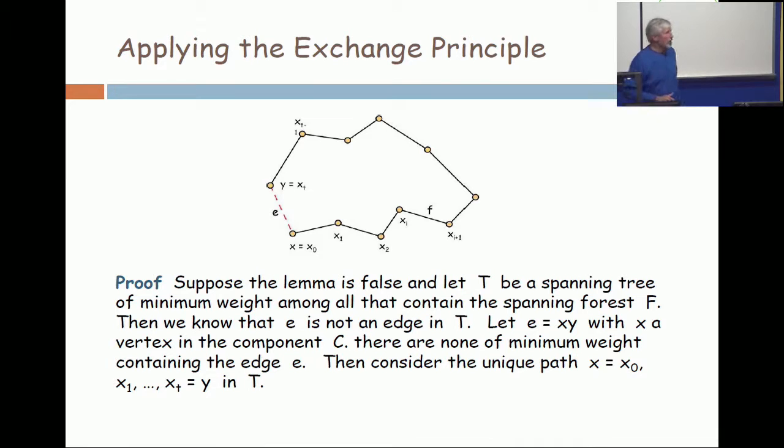Now, we use the exchange principle. You have this spanning tree T that's optimum, and here's an edge E that's not in it, and an edge F which is on the cycle between the two endpoints of E. So the exchange principle says take out F and put in E, and you have another spanning tree.